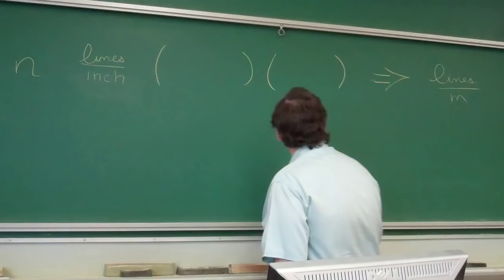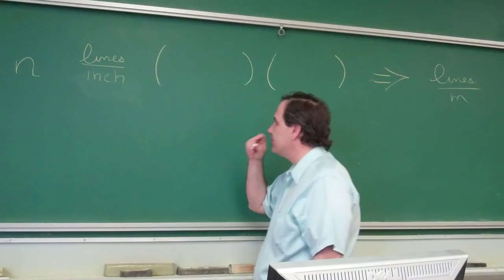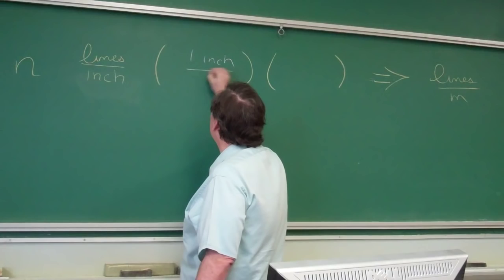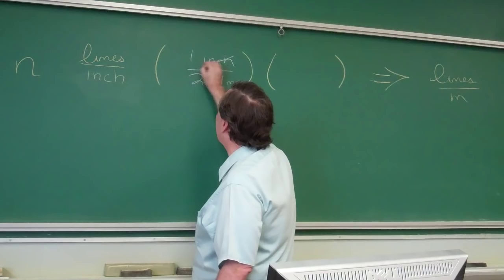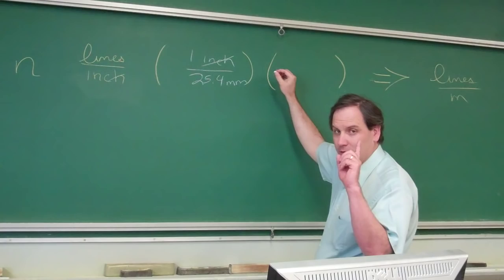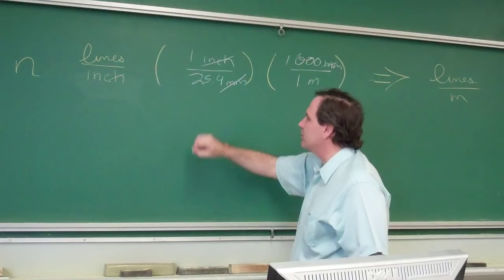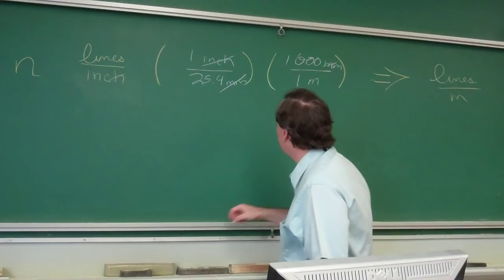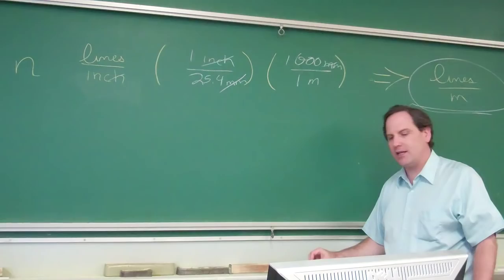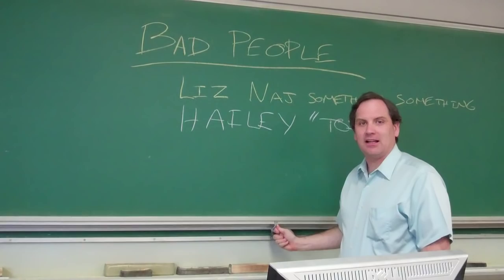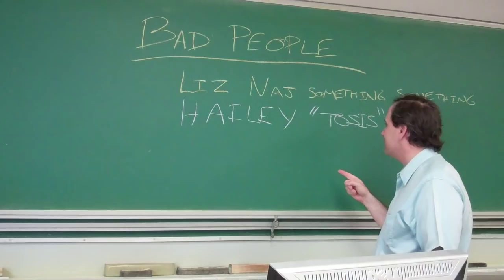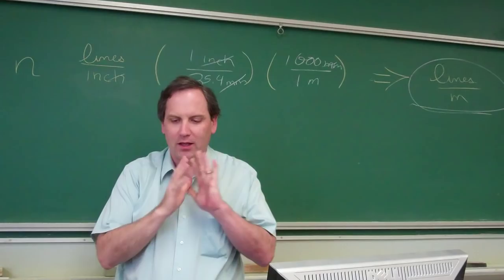So, if I give you the number of lines per inch, how do we convert that to something useful like lines per meter, which is what we're going to need? All right. Well, I know that one inch is 25.4 millimeters. The inches cancel. And I know that there's a thousand millimeters in one meter. The millimeters cancel. So, now, if I multiply this out, a thousand divided by 25.4 times the number you're given, you will get the lines in meters. You are going to need to know how to do that.